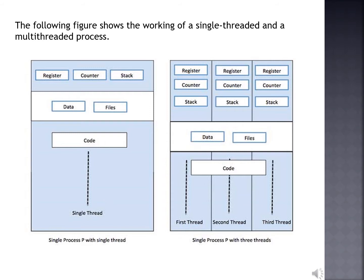What is multi-threading or a multi-threaded process? Multi-threading is mainly found in multitasking operating systems. It is a widespread programming and execution model that allows multiple threads to exist within the context of one process. These threads share the process resources but are able to execute independently. The threaded programming model provides developers with a useful abstraction of concurrent execution. Multi-threading can also be applied to one process to enable parallel execution on a multiprocessing system.